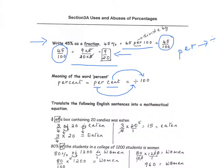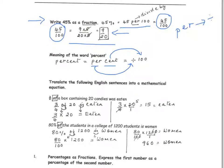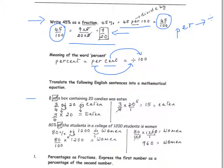Let's look at the first example. The word 'of,' in the context where you have a fraction of the whole — which is 20 candies — translates to multiplication. So '3 fourths of 20 is eaten' is the same as saying 3 fourths times 20 equals the number of candies eaten.